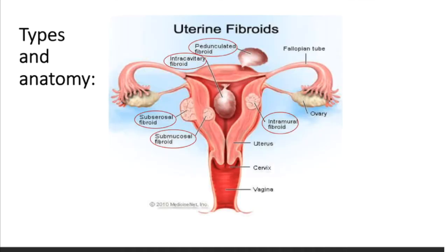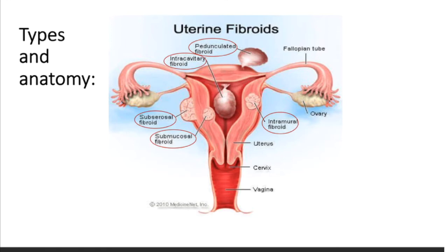Here is just a reminder of the female reproductive system anatomy. The intramural fibroid is the most common one, and the least common is the submucosal fibroid.